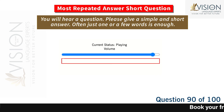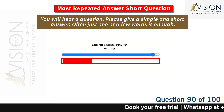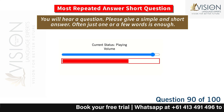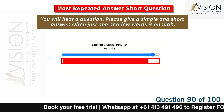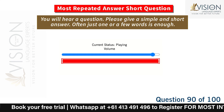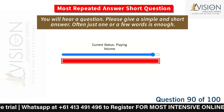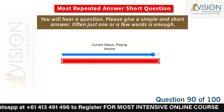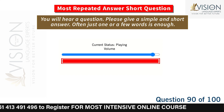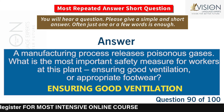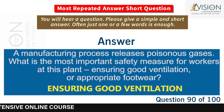A manufacturing process releases poisonous gases. What is the most important safety measure for workers at this plant: ensuring good ventilation, or appropriate footwear? Ensuring good ventilation.